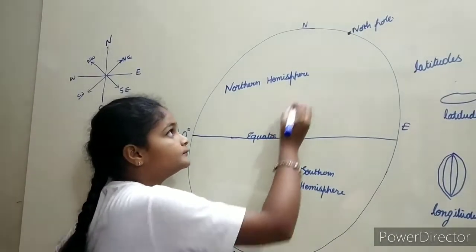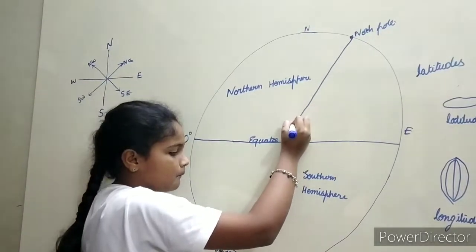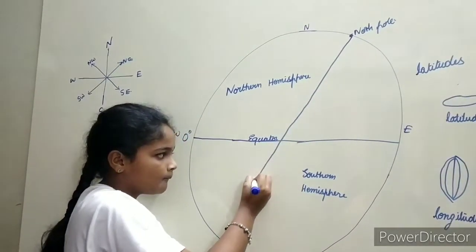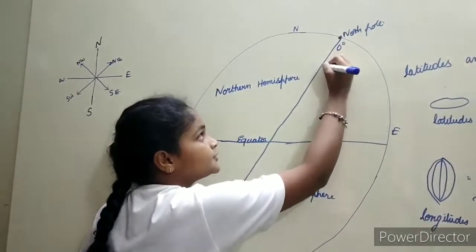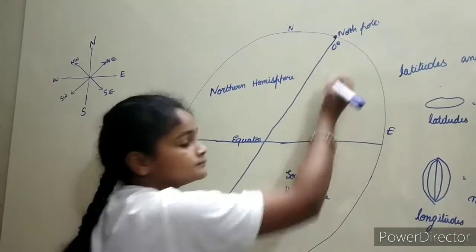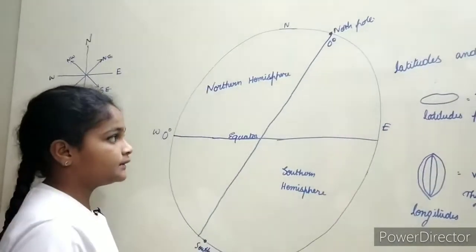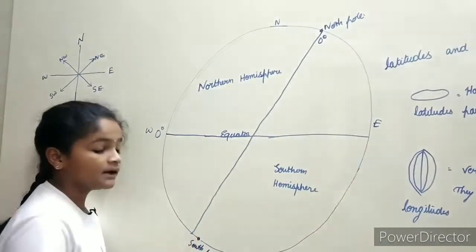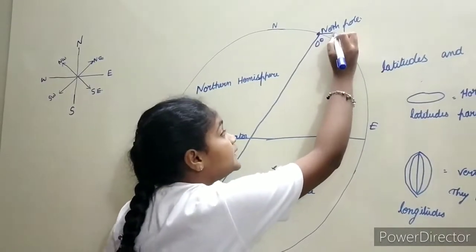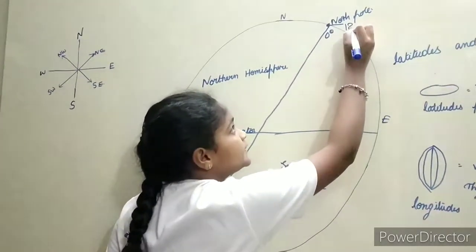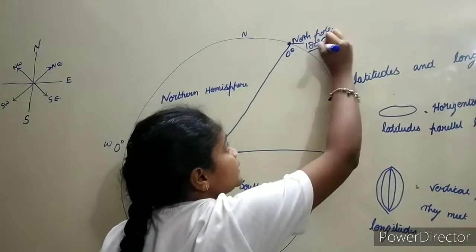Now, longitude. This is the zero degrees longitude. These cannot be divided into two parts because these are semicircles. Exactly opposite of this is a longitude known as 180 degrees east and west longitude.